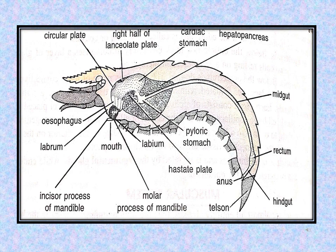The Palaemon's digestive system contains a long alimentary canal and large hepatopancreas. The alimentary canal starts with the mouth and ends with the anus. It shows mouth, buccal cavity, esophagus, stomach, intestine and rectum. The buccal cavity, esophagus and stomach are lined by cuticle and called stomodeum or foregut. Intestine is lined by endoderm and is called mesenteron or midgut. Rectum is lined by cuticle and is called proctodeum or hindgut.